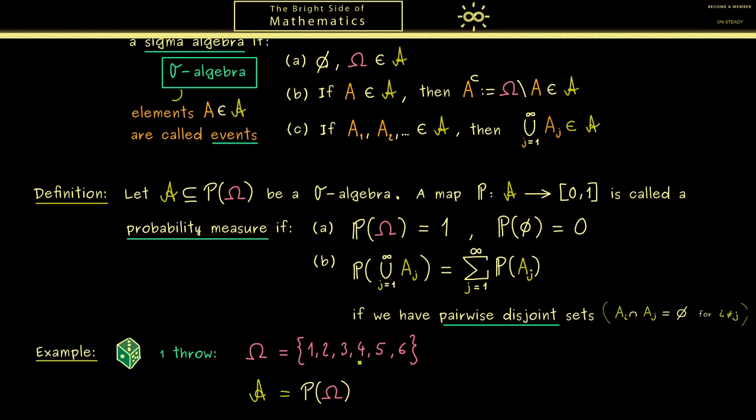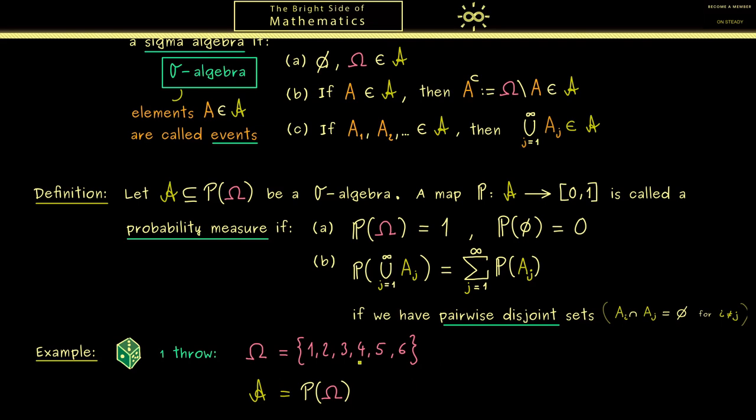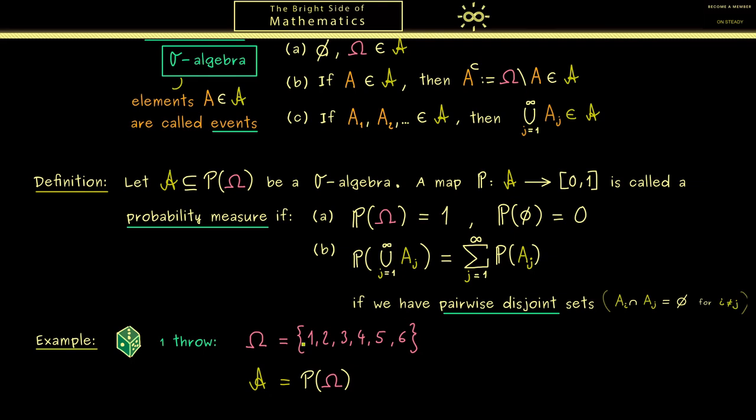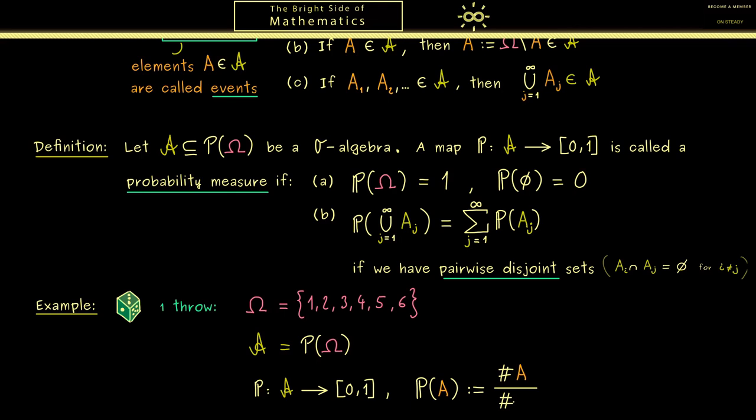And then we define the probability measure on this sigma algebra. In our case, because we have an ordinary die, we have that each side has the same probability. Therefore, in our general definition here, this would mean that we count the elements of A and divide by the elements of Omega. Of course, in this case this would mean in the denominator we have the number 6. For example, if we want to calculate the probability of the event of throwing a 2, we get 1 over 6. On the other hand, the probability of the event of throwing an even number is 3 divided by 6, or in other words 1 half. Okay, and now here you see this is our mathematical model of throwing one ordinary die.